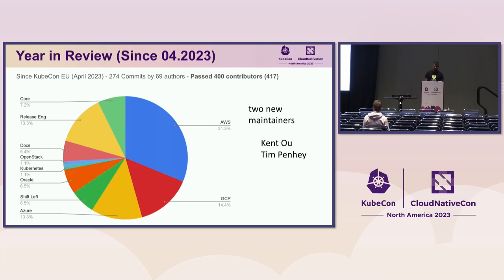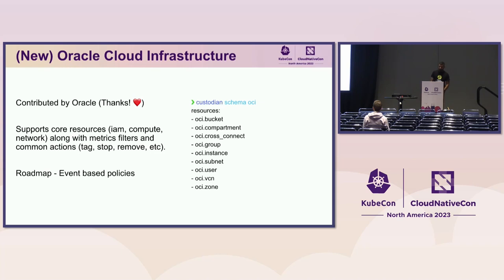There's been a lot of work done on GCP and Azure in particular this past six months, with definitely a lot of new resources. In general, this is pretty common for Custodian — we're keeping up with the pace of innovation from the cloud providers, with new resources, new filters, and new action capabilities. But a few things I wanted to highlight are two new cloud providers.